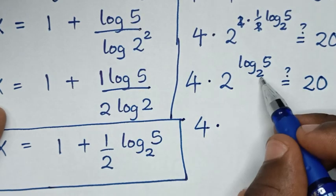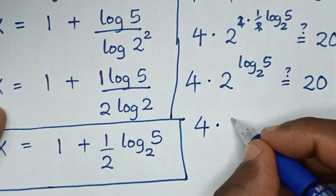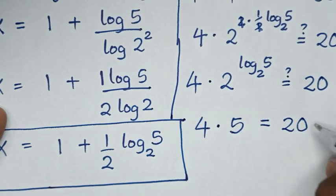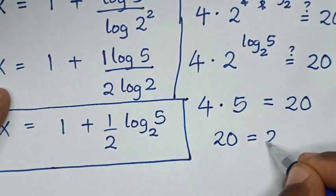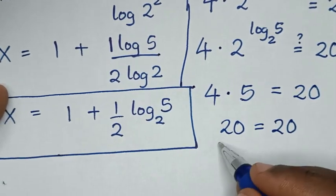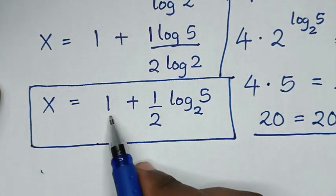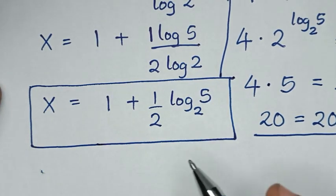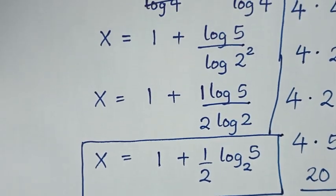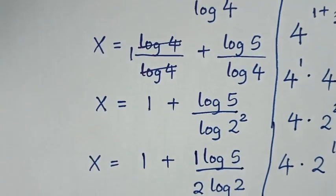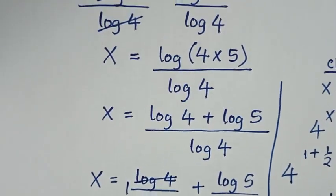It will be 4 times 2 to the power of log of 5 base 2, which equals 5. So it is 4 times 5, which is equal to 20 — equal to 20. Left side and right side are equal, so it is true that x equals 1 plus one-half log of 5 base 2. Thank you, don't forget to subscribe to my channel. See you in the next video, bye bye.